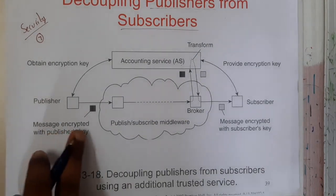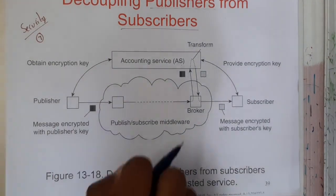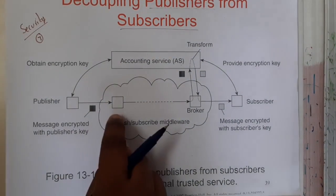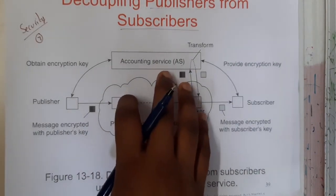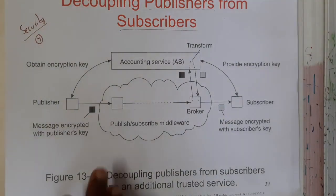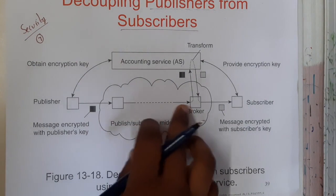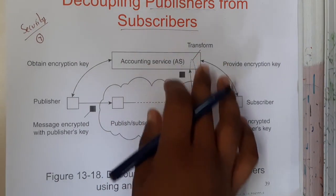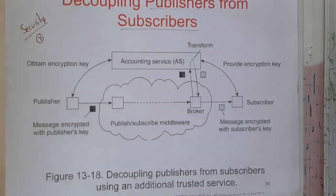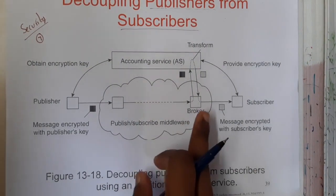The message is encrypted with the publisher key — using this publisher key we will be encrypting it, so you can say the publisher key is like a key that locks the system. It will then be passed to the network. You can even send it through a dedicated path. This is the middleware or network layer. In between, the broker will take it and pass it to the accounting services — it is mandatory to travel through it.